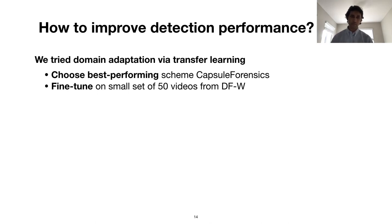A common approach for domain adaptation is to do transfer learning — that is, fine-tuning the model on a limited set of samples from the target domain. So we adapted the best method, Capsule Forensics, using only 50 videos from the DFW dataset. This is realistic because in practice it's unlikely that the defender has access to a large number of fake videos from the target domain.